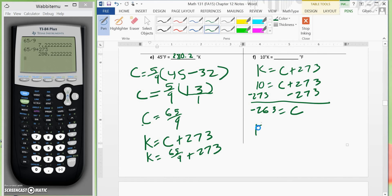So we would take Fahrenheit is equal to 9 fifths Celsius plus 32. So we would substitute in for Celsius and add 9 fifths times a negative 263 plus 32. And we can put this in our calculator.